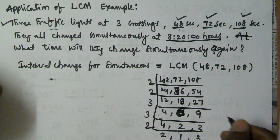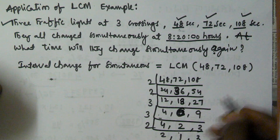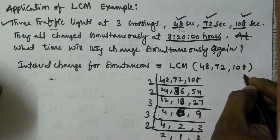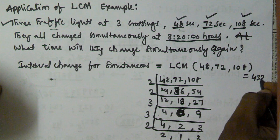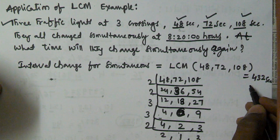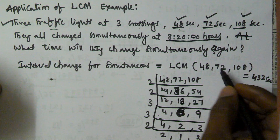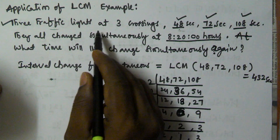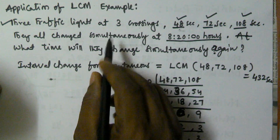So the LCM of 48, 72, and 108 is 432. So after every 432 seconds these 3 traffic lights will change simultaneously.